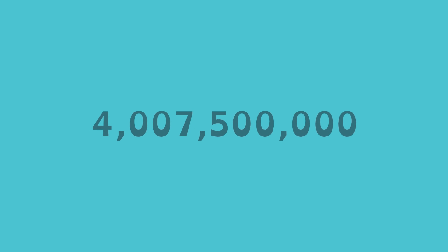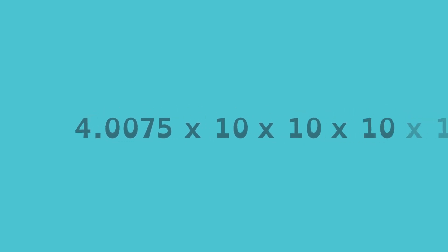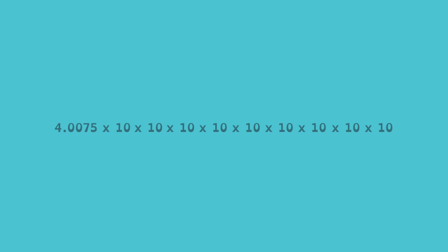The method is similar for numbers that are really big. To change from standard form to scientific notation, just keep track of the decimal. For whole numbers, the decimal point is at the end of the number. Move the decimal point so there's only one non-zero digit to the left of the decimal. The exponent indicates how many places the decimal point has moved to the left. That's the same as saying 4 and 75 ten-thousandths times 10, nine times total. Multiplying by 10 nine times is represented by the exponent positive 9.